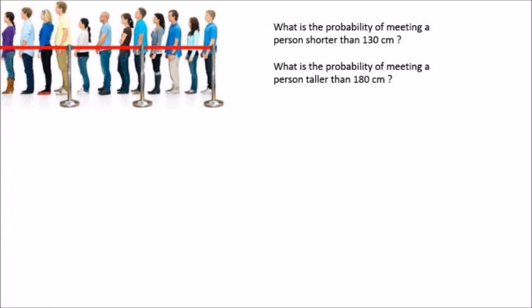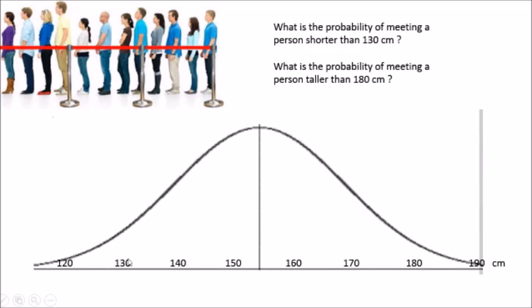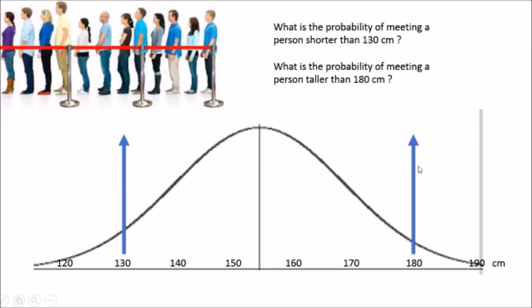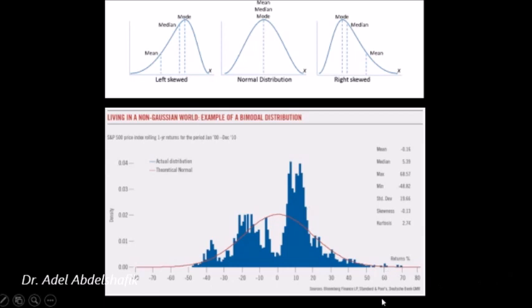Suppose we have a group of people and I ask: what is the probability of meeting a person shorter than 130 centimeters? We collect the data and get a frequency distribution curve with different heights on the x-axis and frequency of occurrence on the y-axis. We calculate persons in that area and divide by the total.